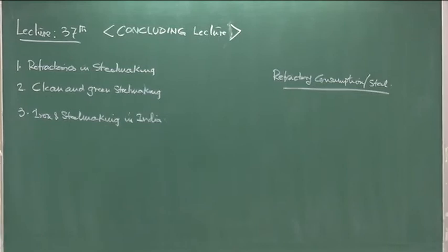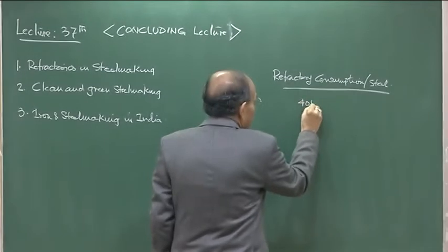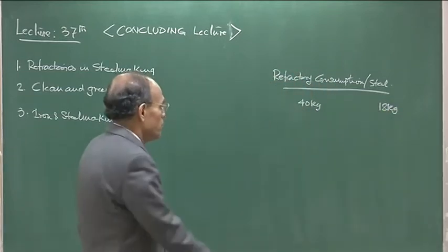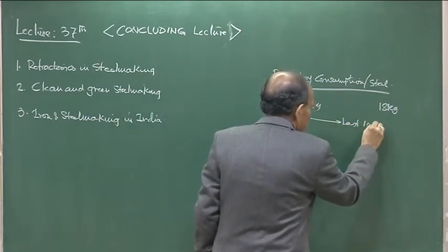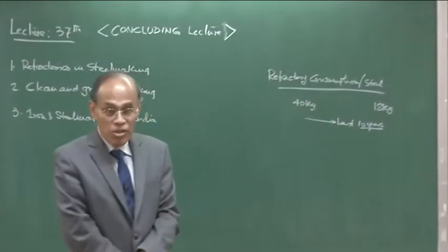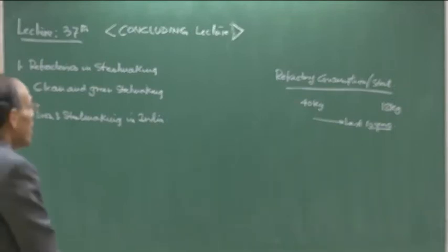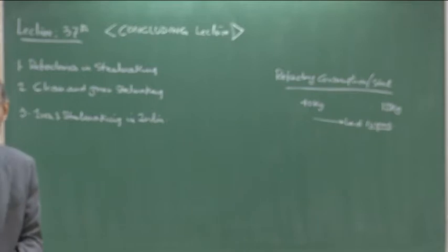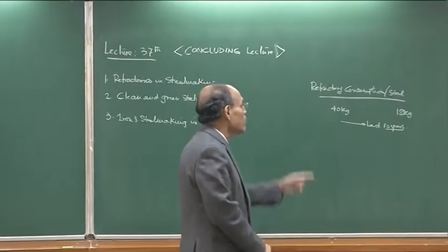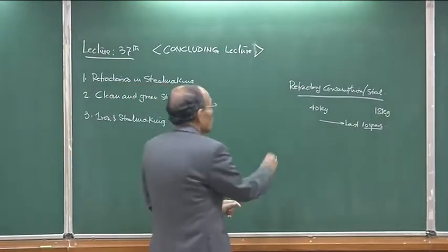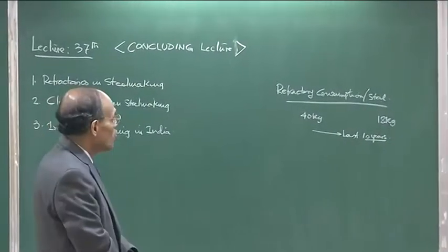About 10 years back, roughly 40 kg of refractory used to be consumed per ton of steel; today it is less than 18 kg — a significant improvement due to better quality refractories and improved understanding of what refractories can be deployed in steel making industries. The refractory industry is a dominant industry — not as big as steel, but certainly very large. Refractories are used extensively in steel, cement, and petroleum industries wherever high-temperature furnaces operate, but the steel industry is by far the most important customer.